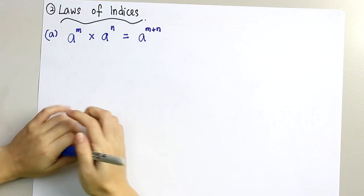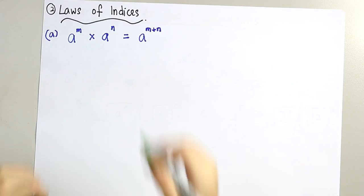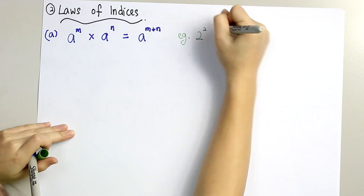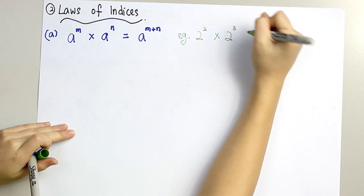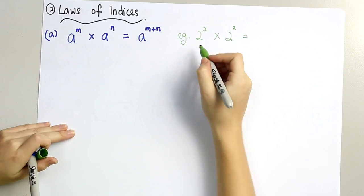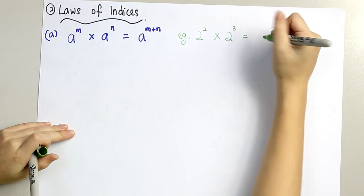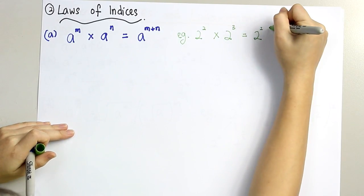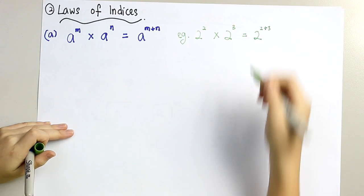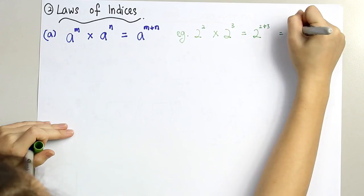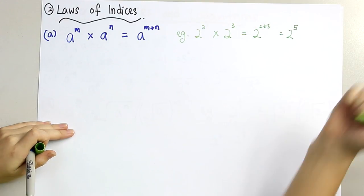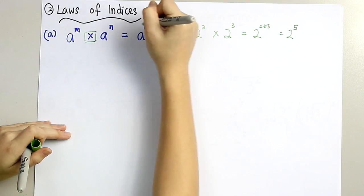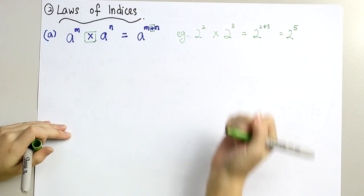Example: 2 to the power of 2 times 2 to the power of 3. Since both of them have the same base, 2, so 2 will remain. We take both of the powers, 2 and 3, and we add them up. So it's 2 to the power of 2 plus 3, which is 2 to the power of 5. For multiplication, we add the powers.